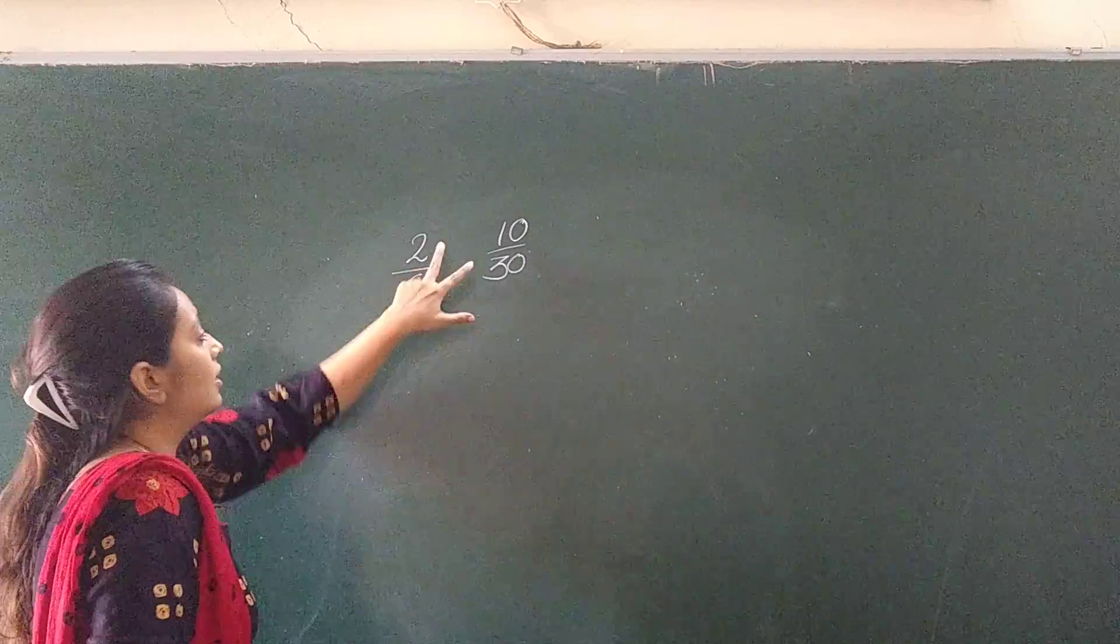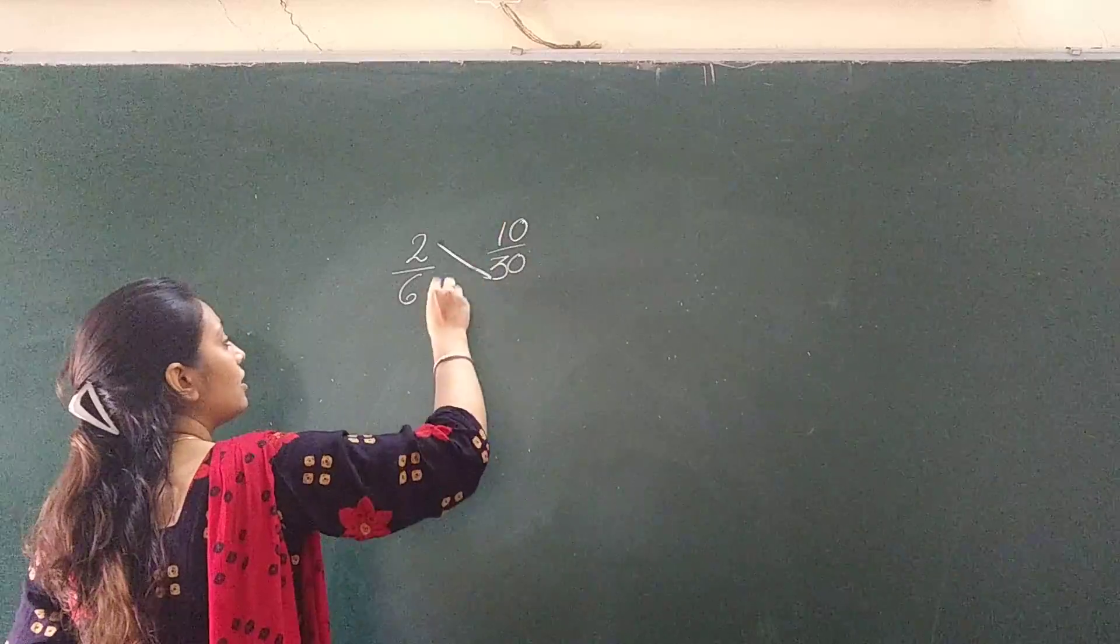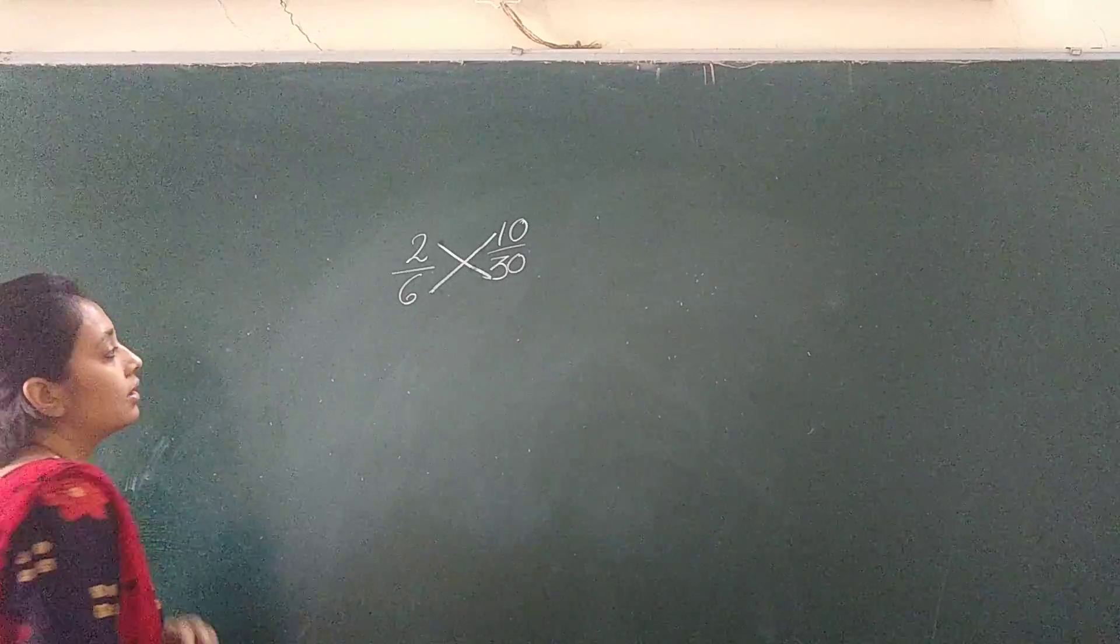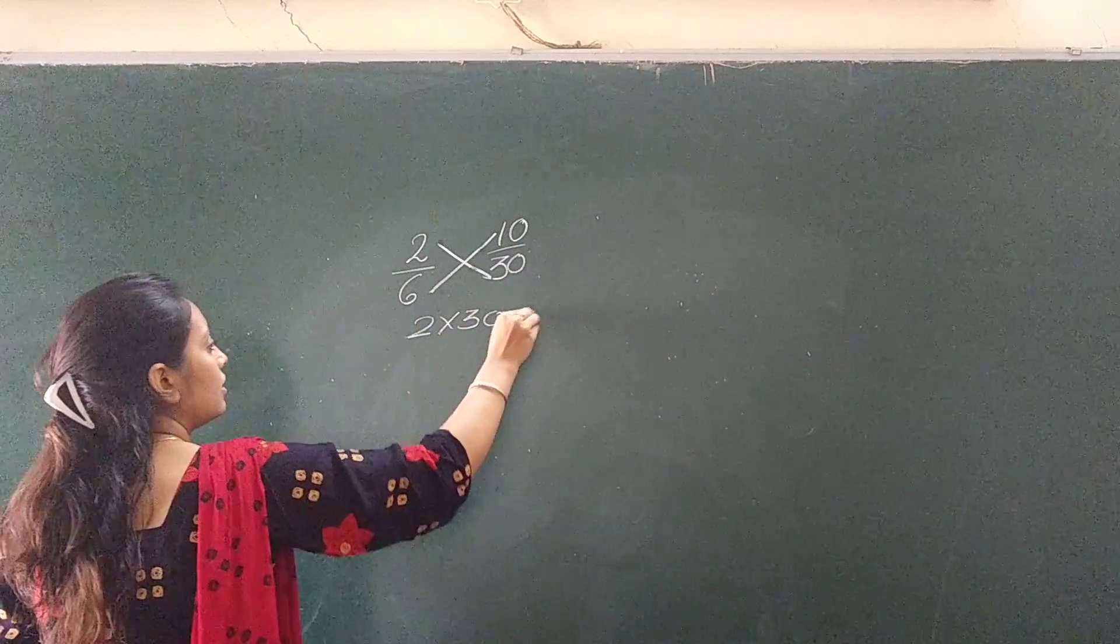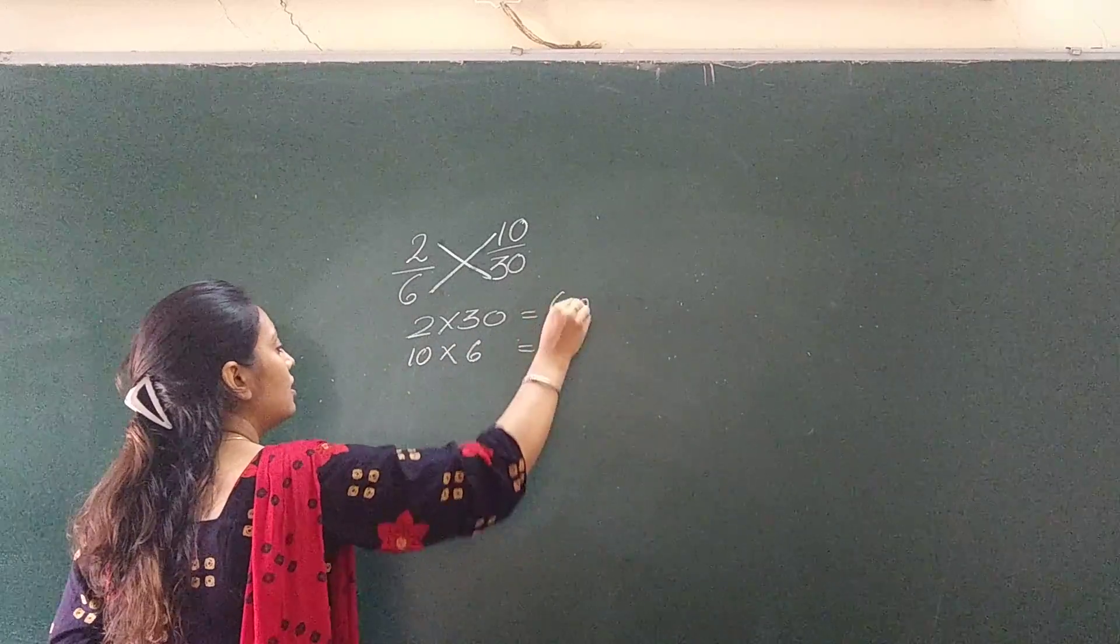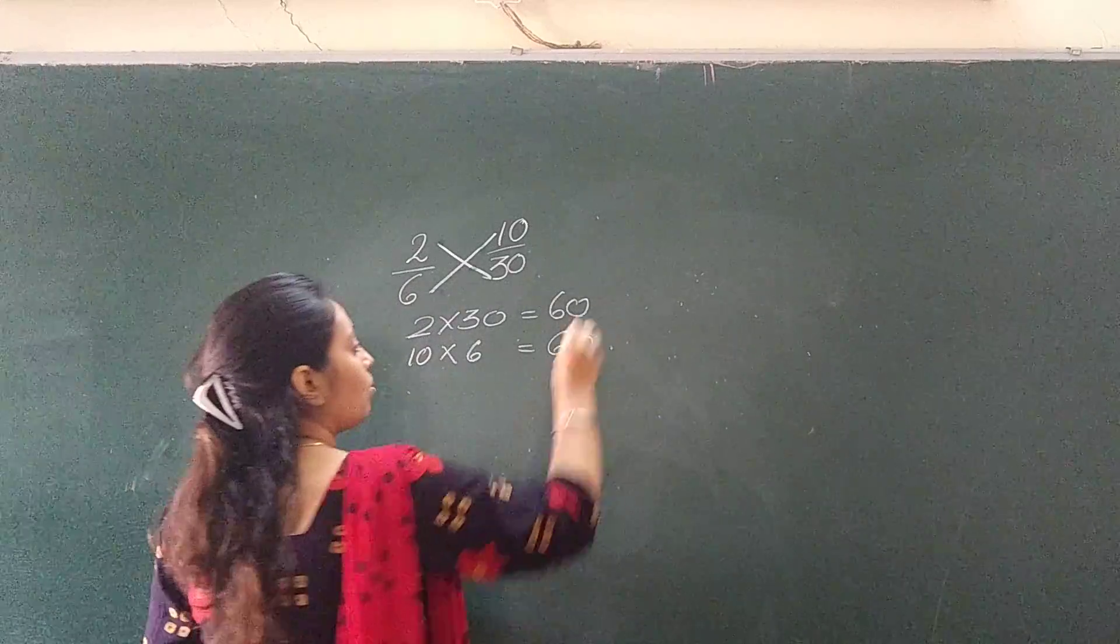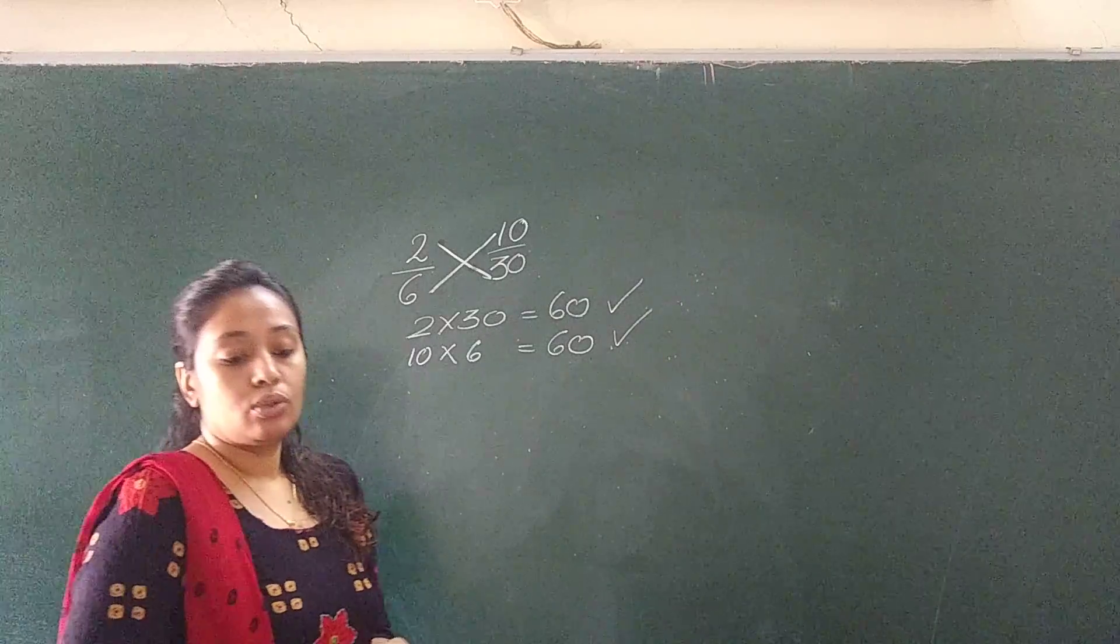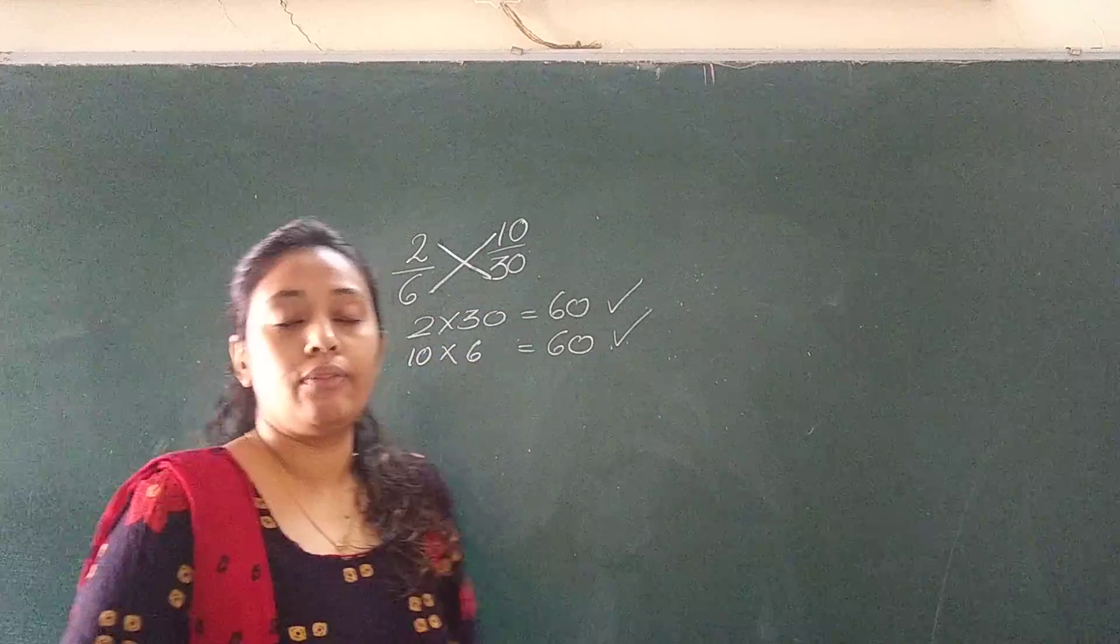What you need to do is cross multiply, simple. Numerator 1 with denominator 2, and numerator 2 with denominator 1. That is, 2 multiplied by 30 and 10 multiplied by 6. This is 60 and this is also 60. So here we can see that both the answers are same, so these fractions are equivalent. 2 upon 6 and 10 upon 30 are called equivalent fractions.